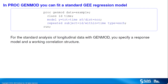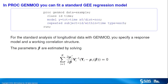To fit a standard GEE using PROC GenMod, you specify a response model and a working correlation structure. The parameters beta in the response model are estimated by solving generalized estimating equations. The working covariance matrix VI depends on the working correlation structure that you specify using the type equals option in the repeated statement. The within equals time option indicates that a subject's responses are ordered by time. You can fit this same model in PROC GEE by specifying the identical model and repeated statements.